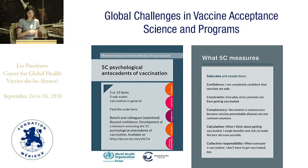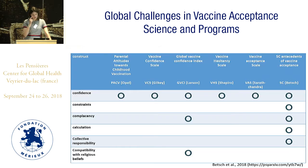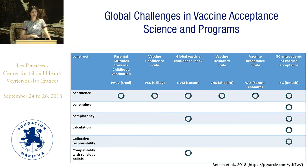If you look at all these scales in a grid — with scales on one axis and the potential constructs measured on the other — we see that all of the scales that exist measure confidence. Some scales measure different constructs, and only one scale measures compatibility with religious beliefs. I'll come back to that later.